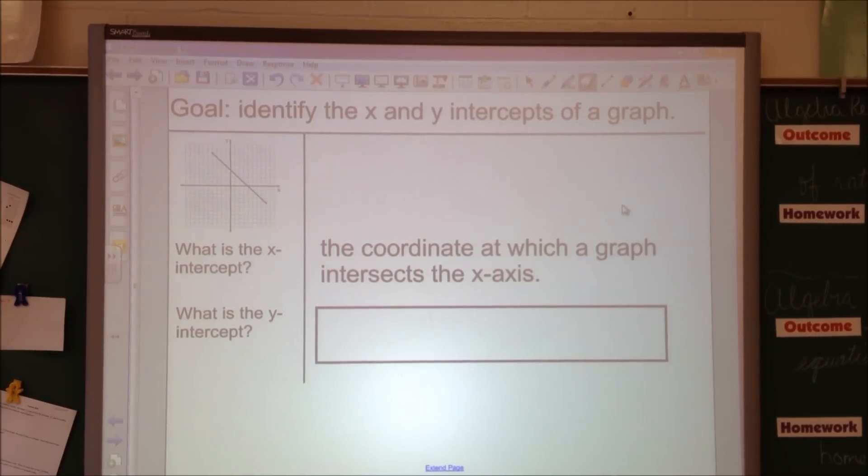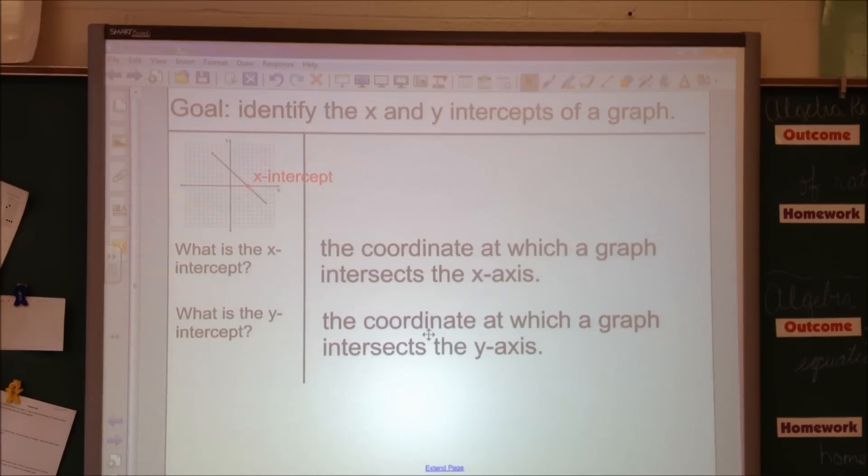If you need to, pause it up, write down that definition. Here is our x-axis, and if I look at my graph up here, right there is my x-intercept, that point where the line crosses the x-axis. The y-intercept is the coordinate at which a graph intersects the y-axis. On my graph up here, this is the y-axis, and this line crosses it right there. So this is my y-intercept.